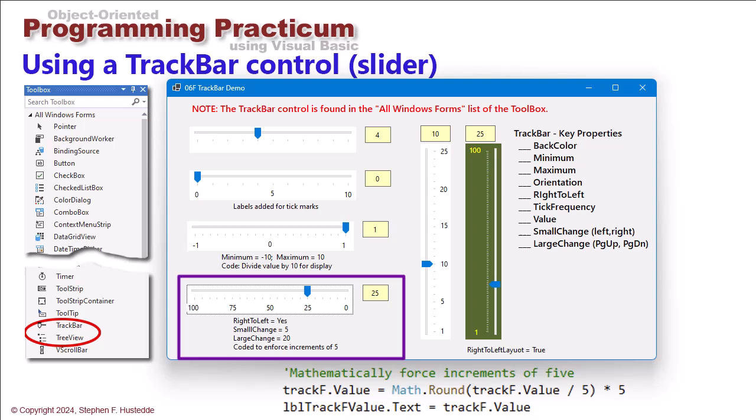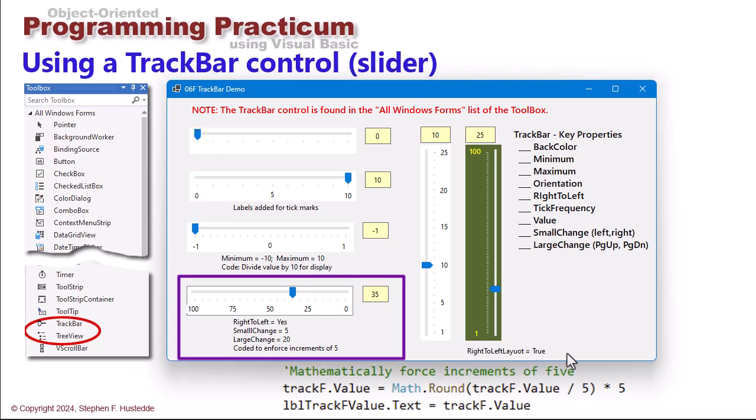I also set the small change to five, so if I press the left arrow key I'll move up here to 30, 35. But if I do a page up it moves 20 units at a time and same with page down.